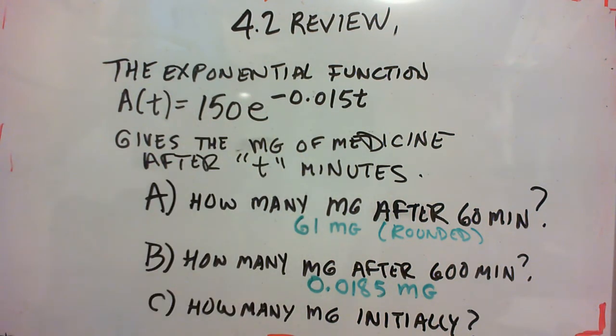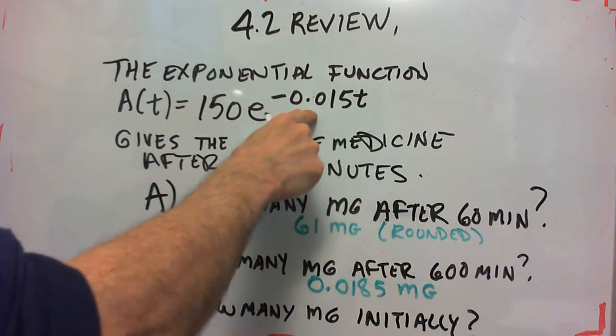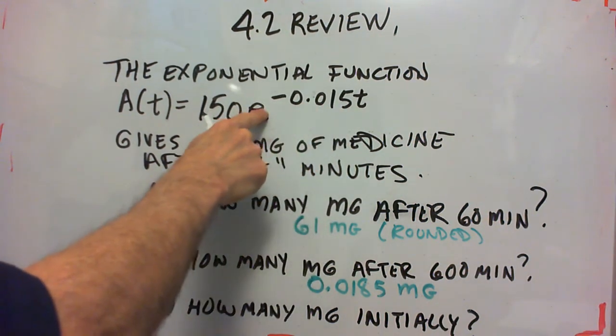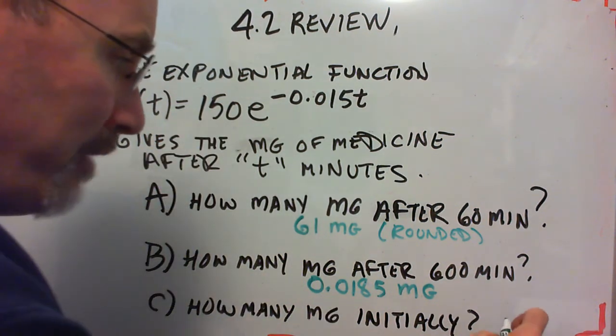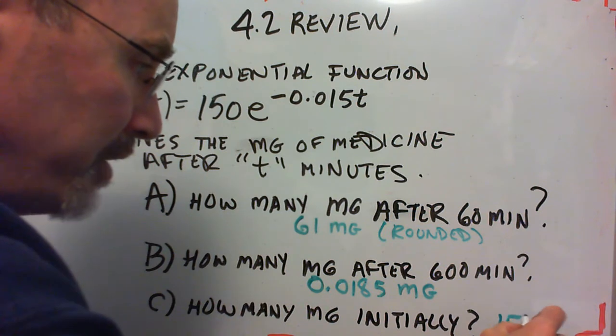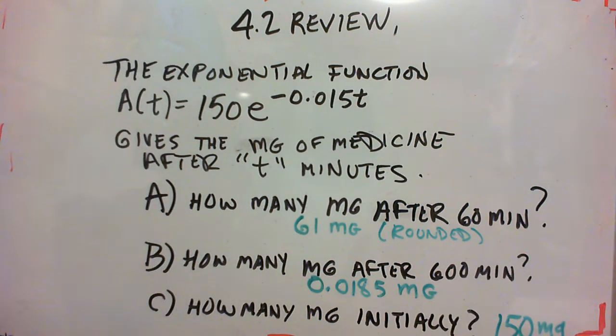Part C, how many milligrams initially? Well initially t is 0. 0 times negative 0.015 is 0. e to the 0 is 1, because anything to the 0 power is 1. So 150 times 1 is 150. That's how many milligrams you're getting initially, 150.